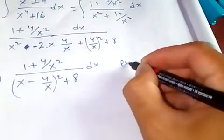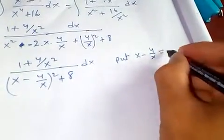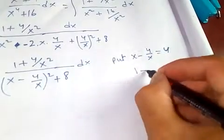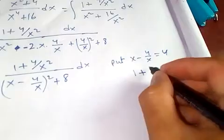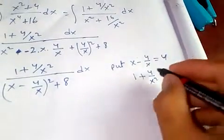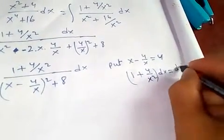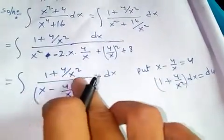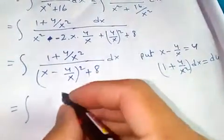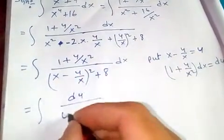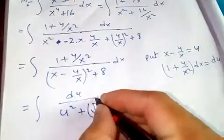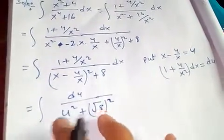Let u = x - 4/x. Differentiating: 1 + 4/x² dx = du, because the derivative of -4/x gives +4/x². So (1 + 4/x²) dx = du, and the denominator becomes u² + 8, which we can write as u² + (√8)². This is our special integral.